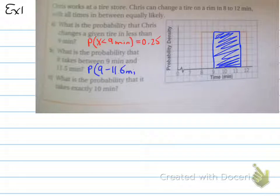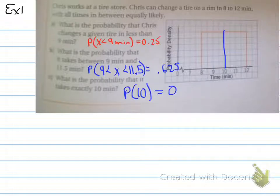So probability of getting some variable x being between 9 and 11 and a half minutes. So let's rewrite this in such a way that makes a little more sense. We want to write the probability of some variable x is between 9 and 11 and a half minutes is going to equal, what? Well, it will equal 0.625.